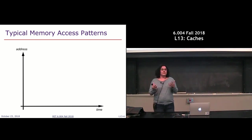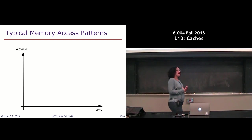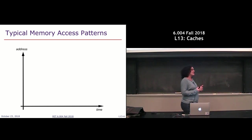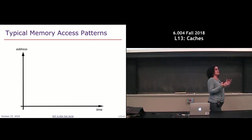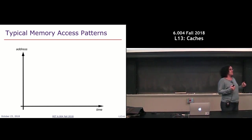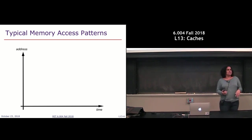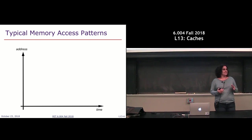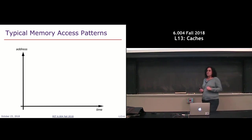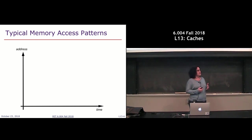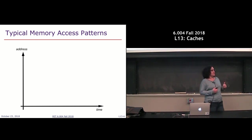In order to figure out which data should live in which memory, we don't want to put the onus on the programmer. Instead, we want the hardware to figure it out automatically to get the best performance possible. To be able to do that, we first want to look at what typical memory accesses look like over time.